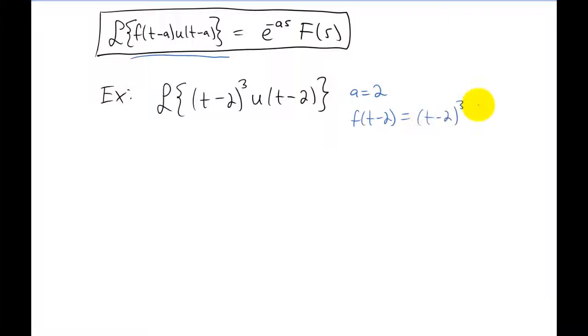Now the answer to this Laplace transform is just going to be this right hand side right here. We know e to the negative A s is just going to be e to the negative two s for our problem. But we need capital F of s. Capital F of s represents the Laplace transform of little f of t. So what we need before we can get capital F of s is little f of t. We have little f of t minus two.